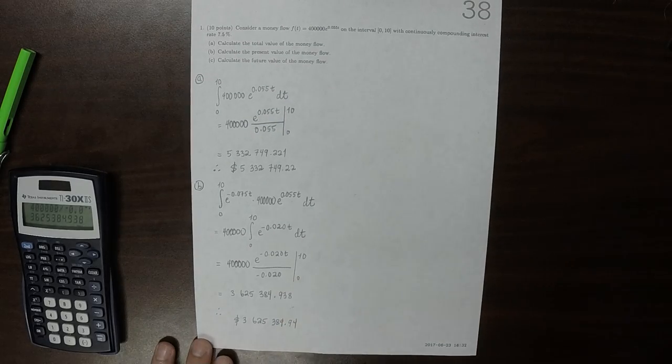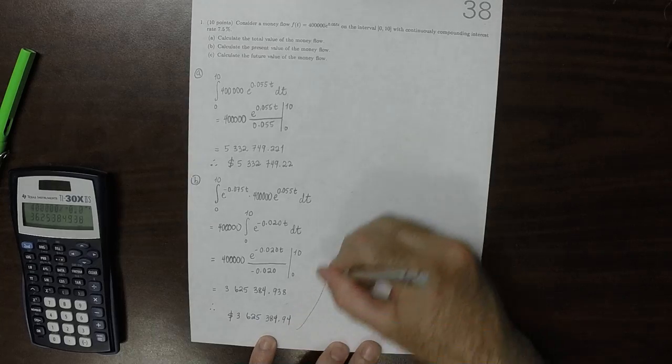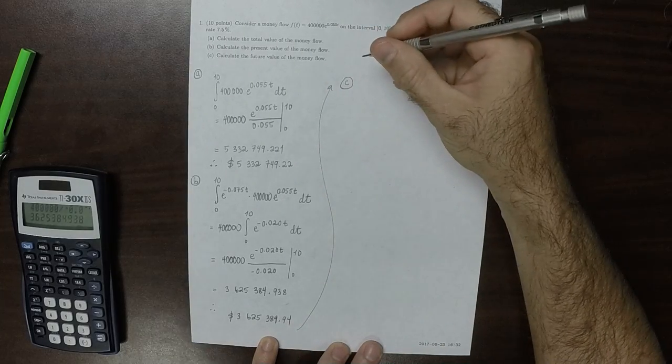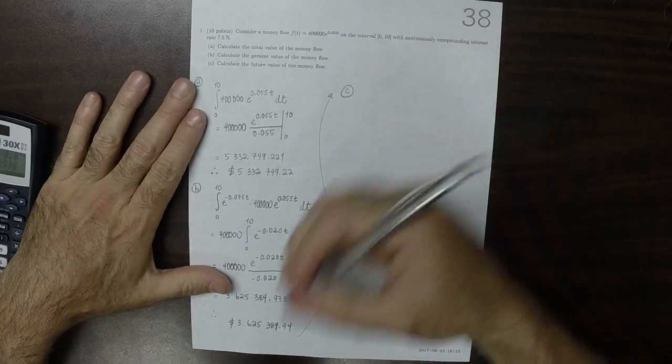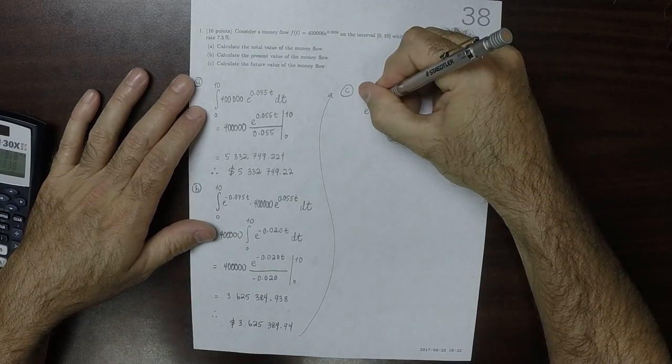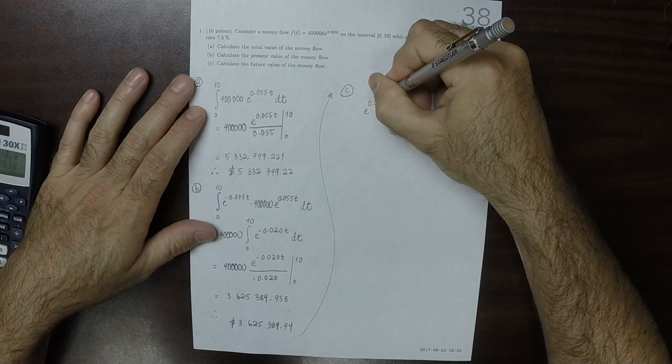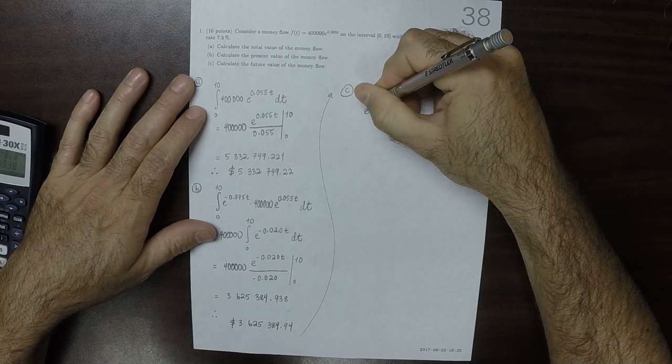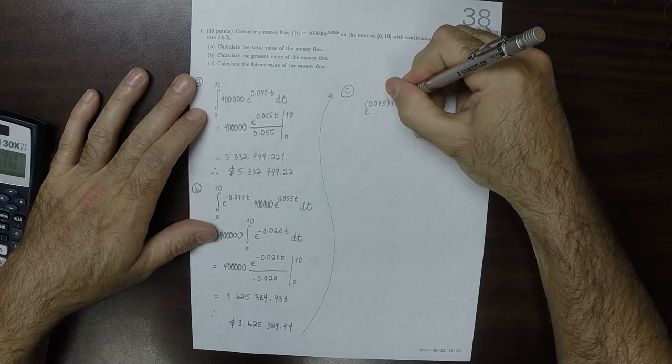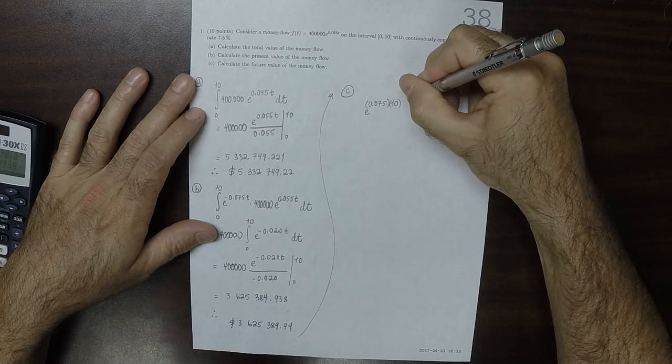So that's the present value. Let's see the future value. Well, this will be exponential of 0.075, the interest rate, times the end time, 10.